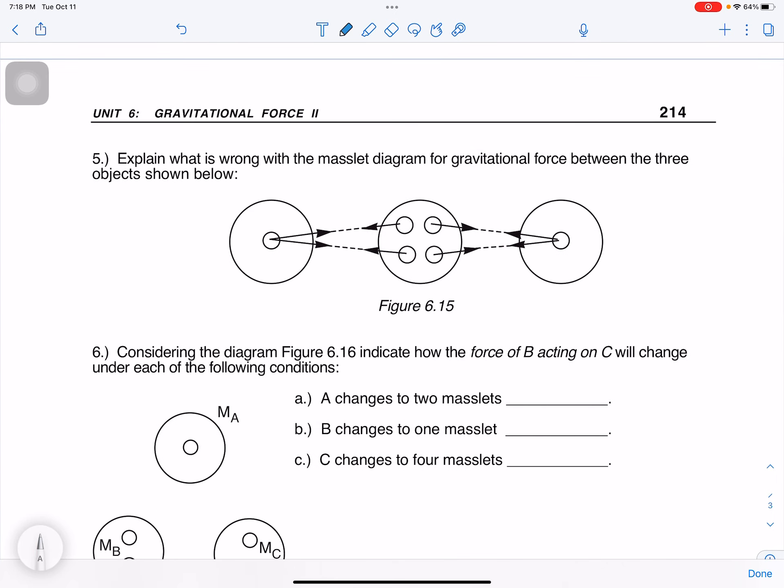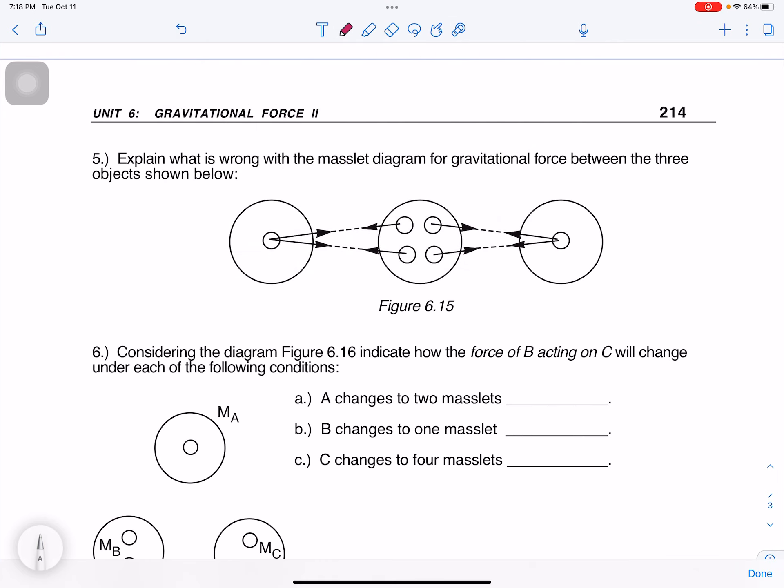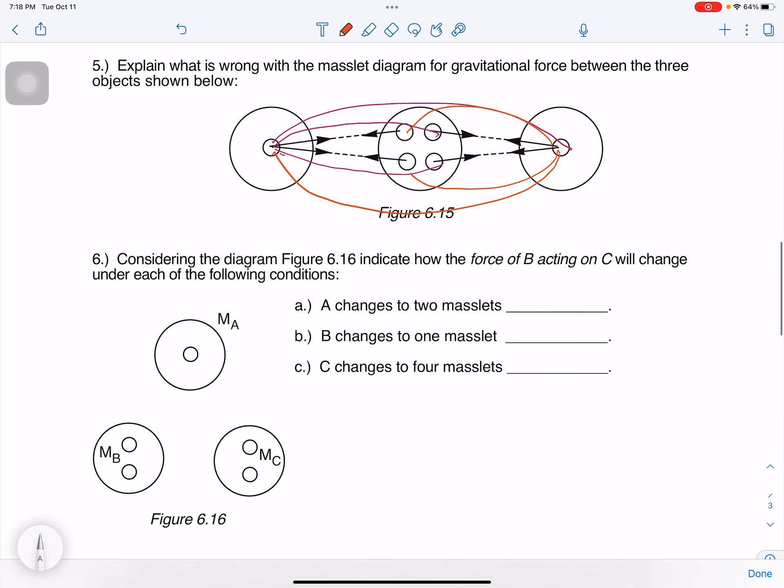All right, number five. Explain what is wrong with the mass diagram for gravitational force between the three objects shown. Well, it's not showing anywhere close to as many lines as it should, because every mass on each object should attract every mass. And so this one, I should also have a line here, and a line here, and then a line to there. And then for the other one, I should have a line to here, a line to here, and a line to there. So every mass slit attracts every other mass slit.